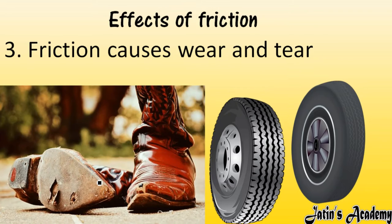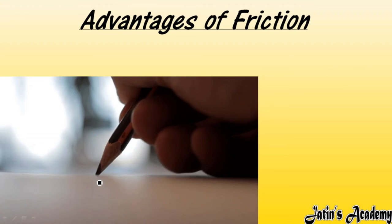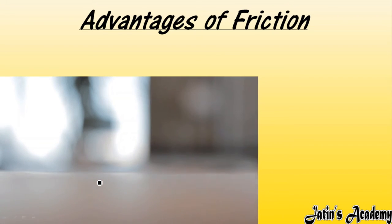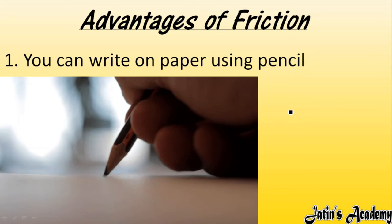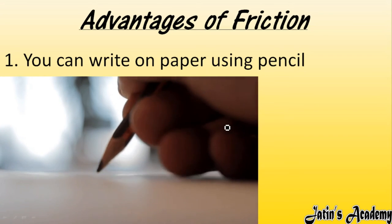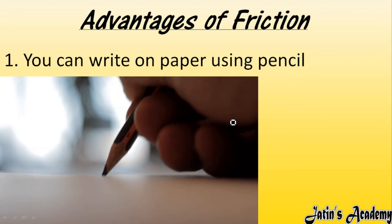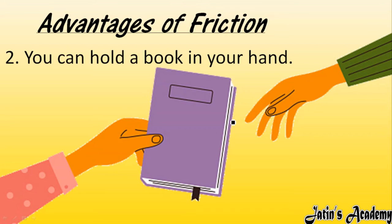Now the advantages of friction. First: we are able to write on paper because of friction — the pencil grips the paper due to friction. Without friction, the pencil would slide and we could not write anything. Second: we are able to hold a book, a pen, or any object in our hand due to friction between the object and the hand.